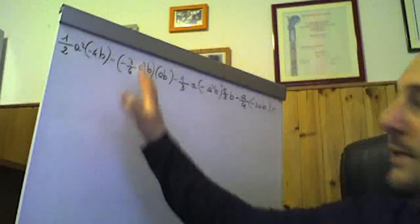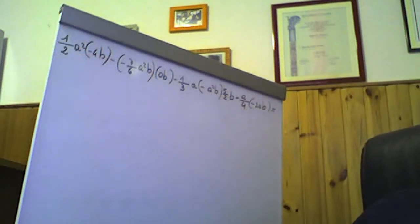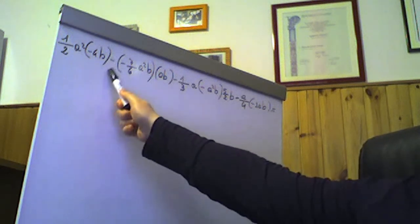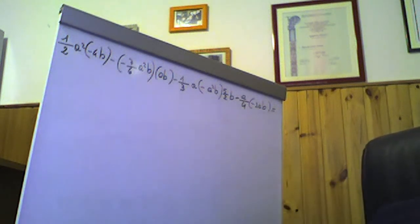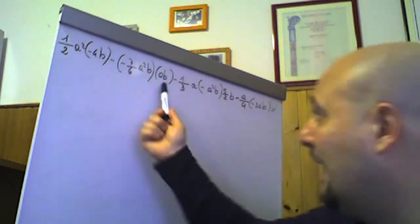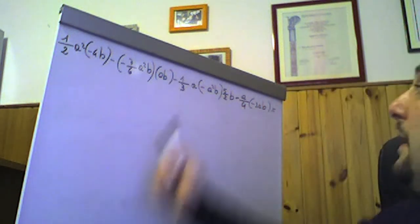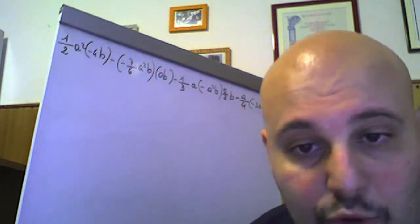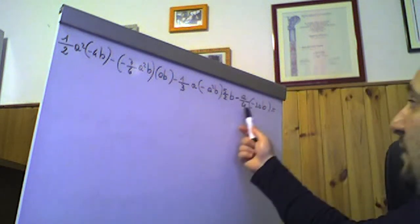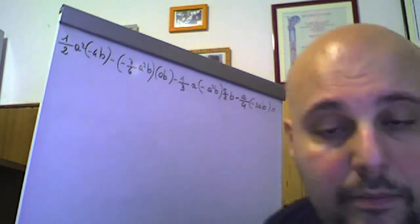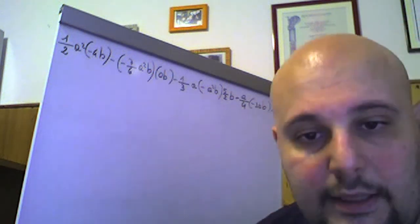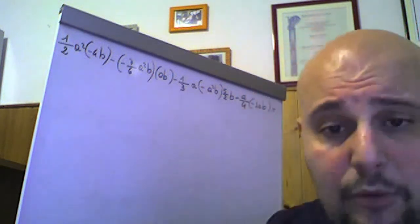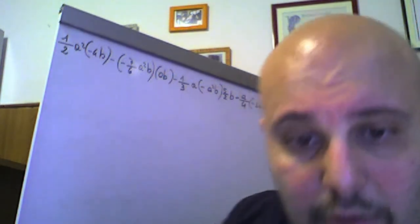Andiamo avanti con il quarto esercizio: 1/2 a²(−4b) − (−7/6 a²b)(ab) − 1/3 a(−a²b)(5/2 b) − a/4(−2b). Questo è un esercizio considerato il fiore all'occhiello del capitolo, ma molto facile. Applichiamo prima le moltiplicazioni, poi eventualmente le somme algebriche.